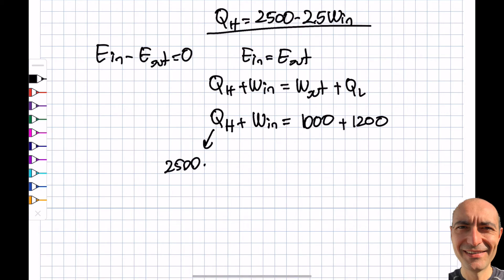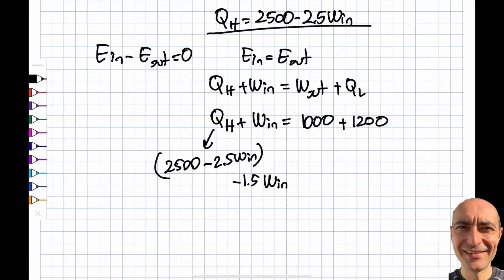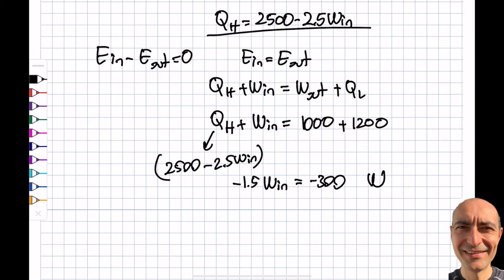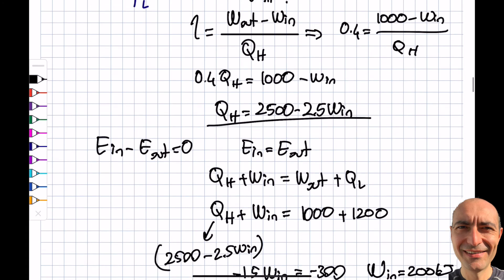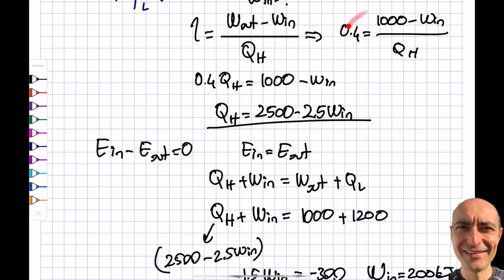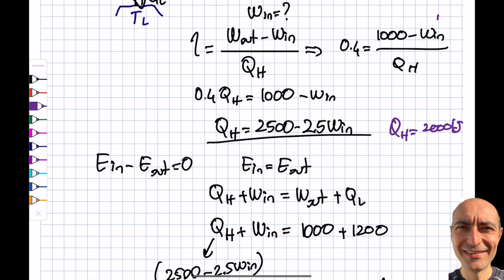Substituting Q_H = 2,500 − 2.5 × W_in into the first law equation: (2,500 − 2.5 × W_in) + W_in = 2,200. This simplifies to −1.5 × W_in = −300, giving W_in = 200 kilojoules. To verify: Q_H = 2,500 − 2.5 × 200 = 2,000 kJ. Then η = (1,000 − 200) / 2,000 = 800 / 2,000 = 0.4 ✓. The answer is confirmed correct.